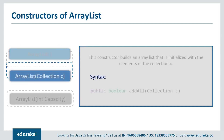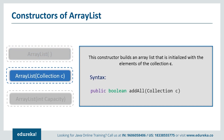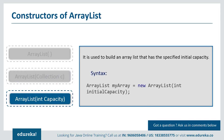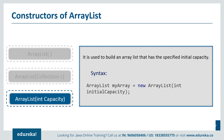The second constructor is ArrayList(Collection c). This is used to add all the elements of a specified collection C to the current ArrayList. The third constructor is ArrayList(int capacity). This is used to build an ArrayList that has a specified initial capacity, where the initial capacity is the number of cells the ArrayList starts with. It can expand beyond this capacity if you add more elements.